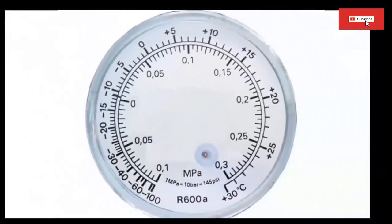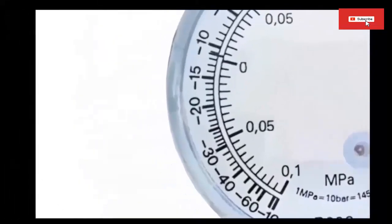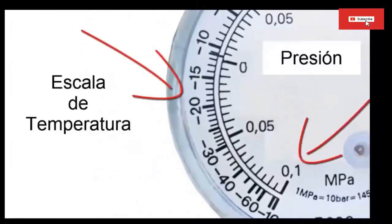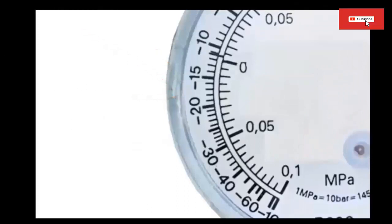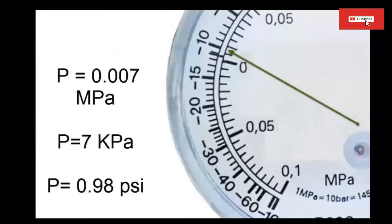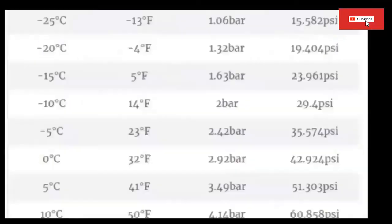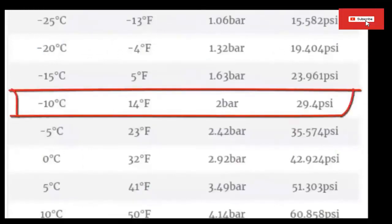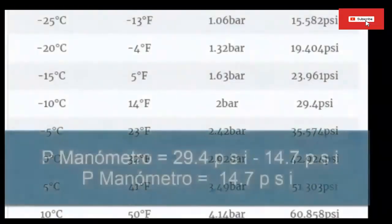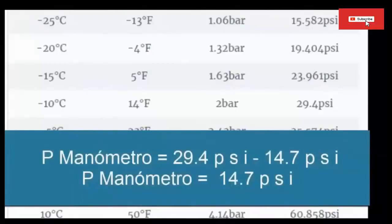This manometer clearly brings the temperature scale together with the depression in a very simple way. For example, for a low temperature of minus 10 degrees Celsius, we only have to wait for the needle to stop, with the equipment turned on, at the value of minus 10 degrees Celsius — in this way the following pressure value is obtained. We have low pressure for equipment that works at minus 10 degrees Celsius: an absolute pressure of 29.4 psi. To know the pressure that the manometer would show, we subtract the atmospheric pressure from the table value: 29.4 psi minus 14.7 psi, giving a gauge pressure value of 14.7 psi.